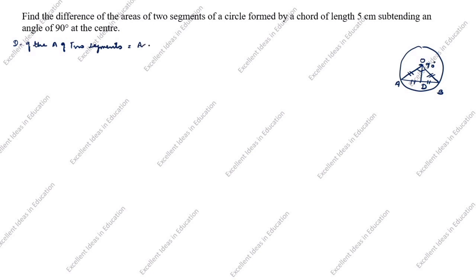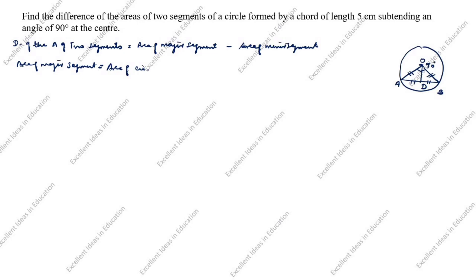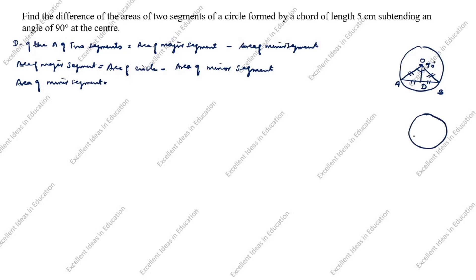In this question, what we need to find is the difference of the areas of two segments: area of major segment minus area of minor segment. The formula for area of major segment equals area of circle minus area of minor segment. First, understand what is major and what is minor segment in this circle. This area is the major segment, this area is the minor segment. The minor segment formula is area of sector OBDA.